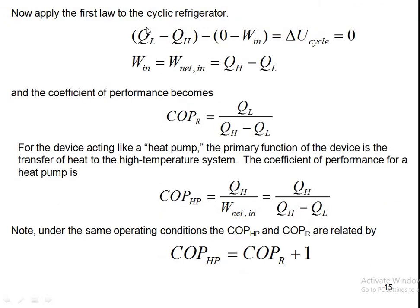Applying the first law to this cyclic refrigerator: Q_net − W_net = ΔU_cycle = 0. So Q_net is QL − QH, and W_net_in = QH − QL. Therefore, the COP of the refrigerator becomes COP_refrigerator = QL / (QH − QL), replacing W_net_in with QH − QL.